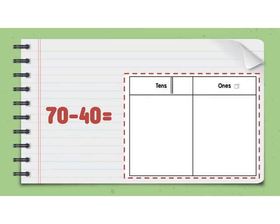Let's look at the next one. If I have 2 multiples of 10. So I have 70 which is a multiple of 10 and I have 40 which is a multiple of 10 and I'm going to subtract.